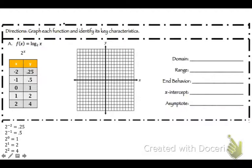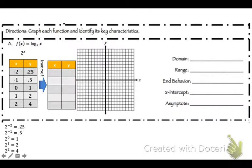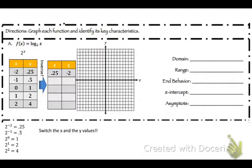But that's for the exponential function. Since logarithms and exponentials are inverses of each other, I need to invert this table. To do that, you just switch your x and y values. So the new table becomes: x values 0.25, 0.5, 1, 2, 4 and y values negative 2, negative 1, 0, 1, 2. You have to show me both tables — I will mark it wrong every time if you don't.